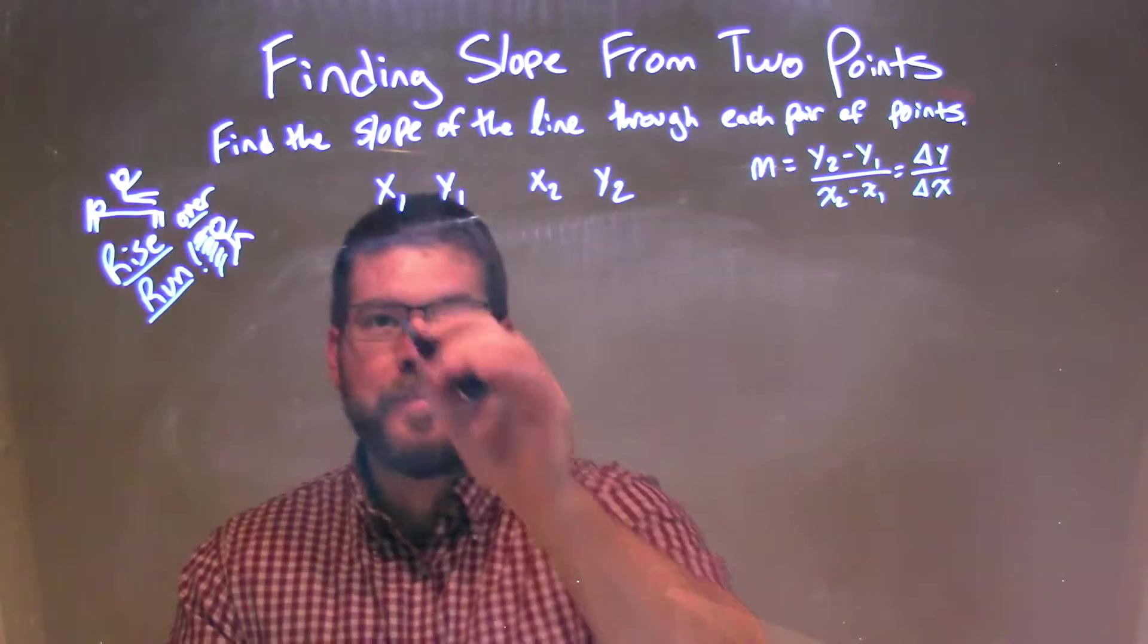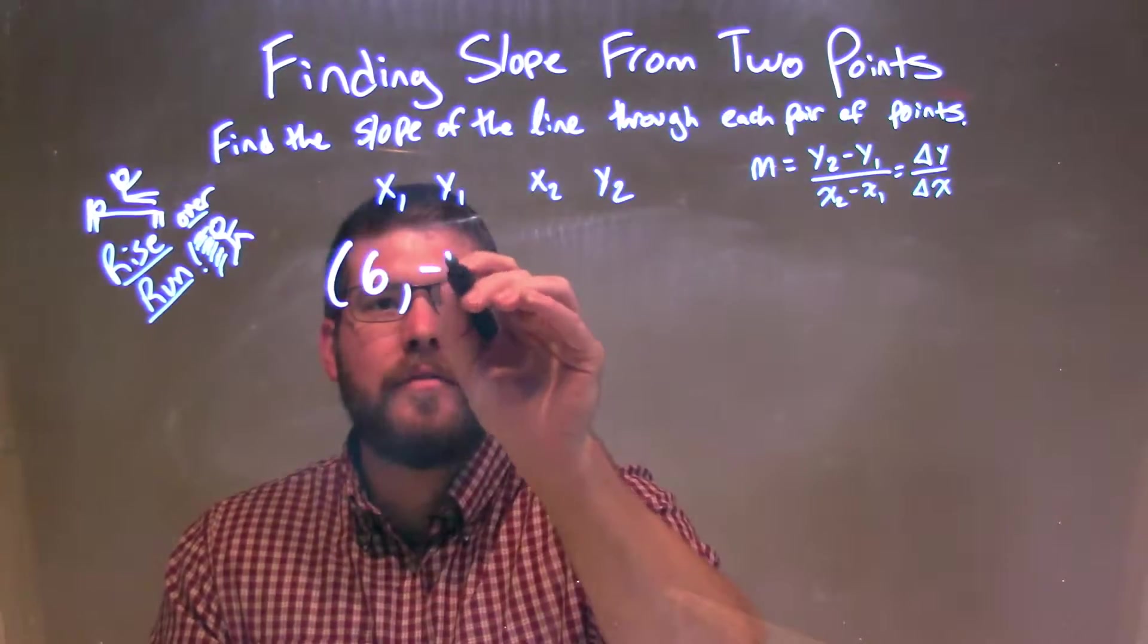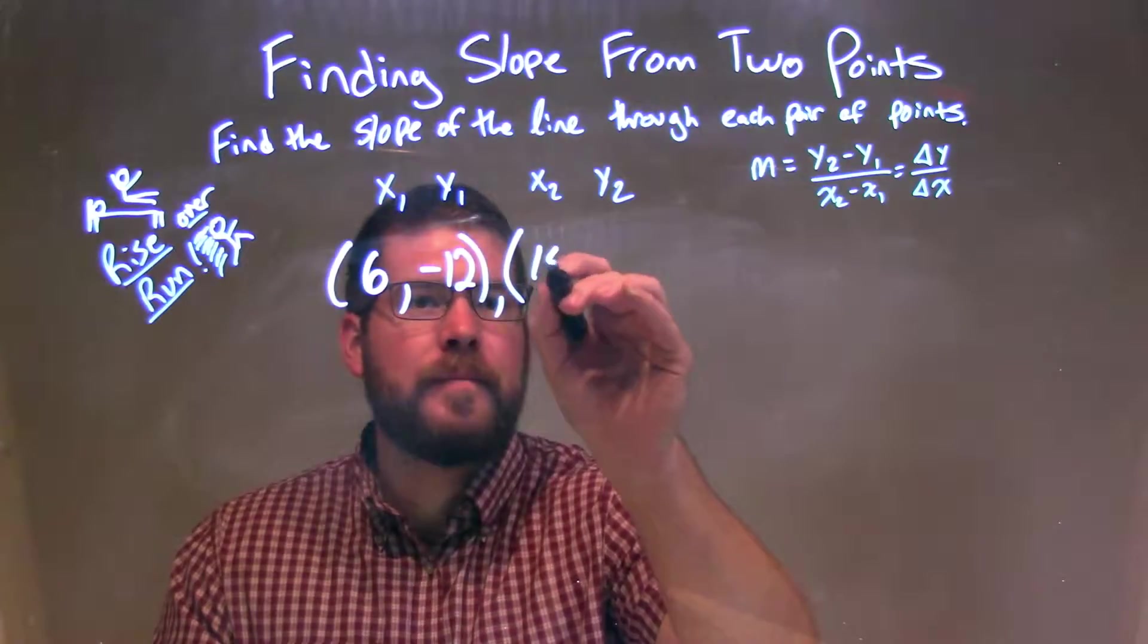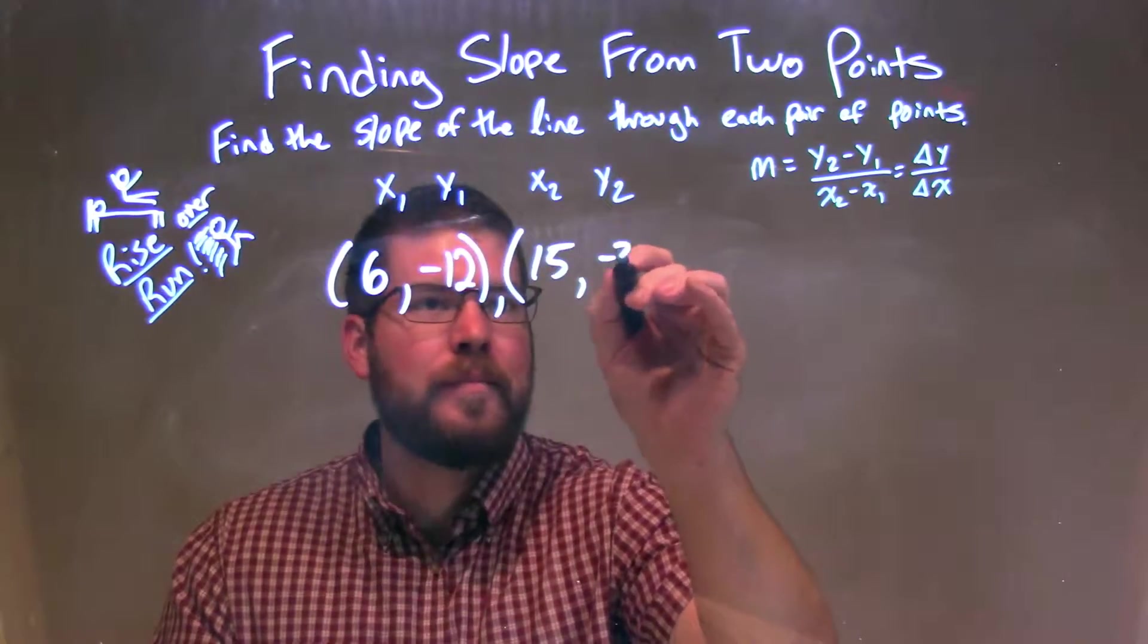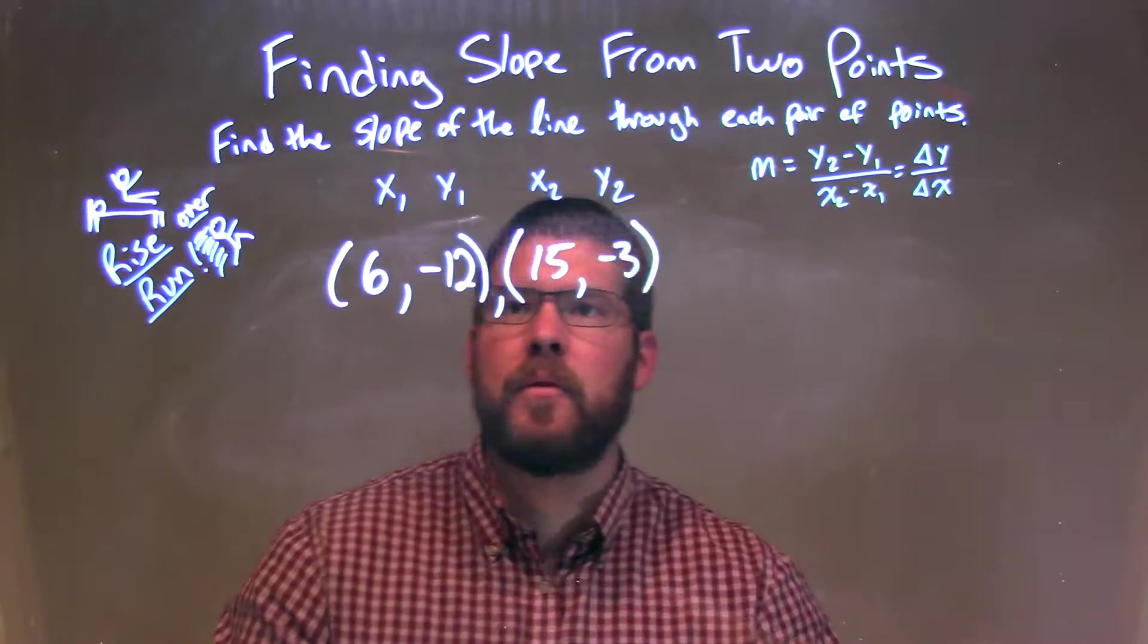So if I was given these two points here, 6, negative 12, my second point being 15, negative 3. So I have my two points right there.